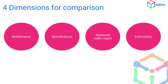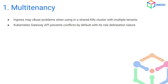We will be using four dimensions for comparison: multi-tenancy, specifications, advanced traffic management capabilities, and extensibility. Let's start with multi-tenancy. Ingress causes a lot of problems in shared clusters with multiple tenants. As you have only one Ingress resource, it's highly likely that someone else applying rules would overwrite yours, and you need proper RBAC rules set up for even basic tasks. With the Gateway API, it has role-delegated CRDs — a developer only needs to worry about HTTP routes, while a cluster admin handles the Gateway class and controllers. Since the roles are segregated, it works best for multi-tenancy.